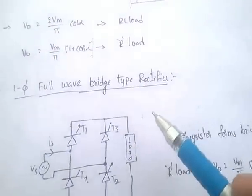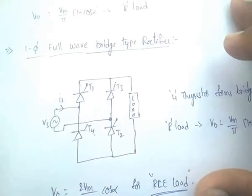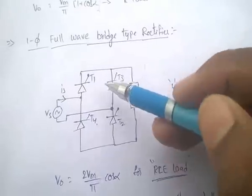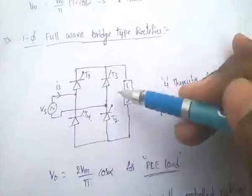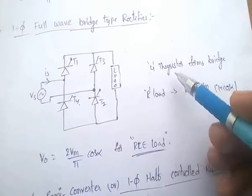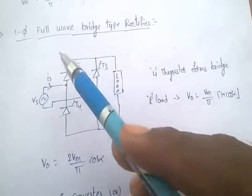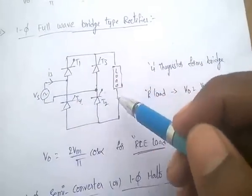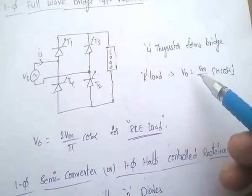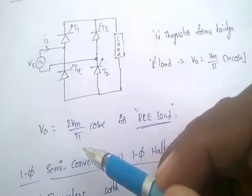Single phase full-wave bridge type converter uses four thyristors T1, T2, T3, T4 to convert single-phase AC to DC. For R-load: V₀ = Vm/π × (1 + cos α). For RL load: V₀ = 2Vm/π × cos α.